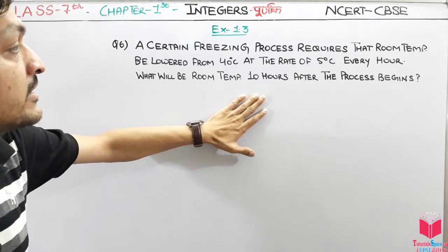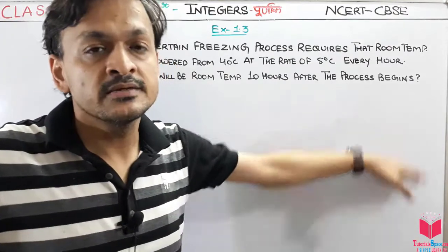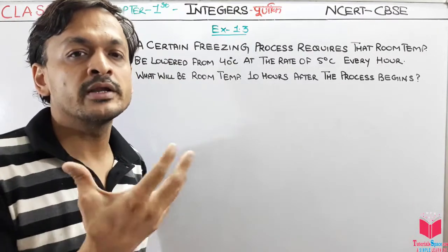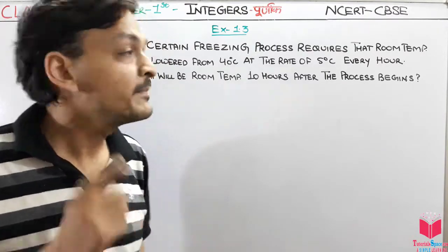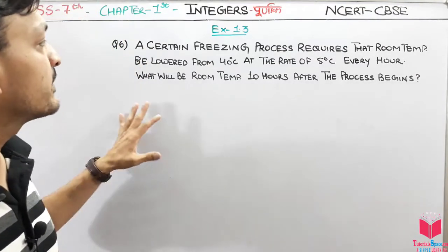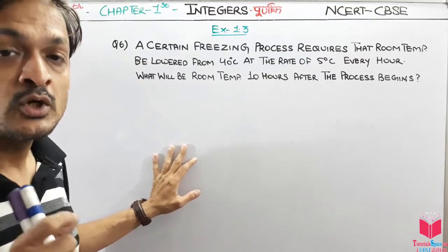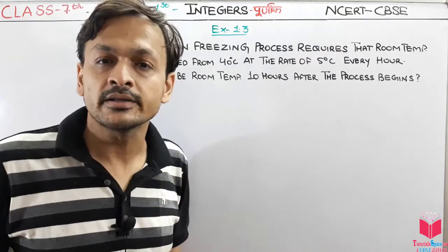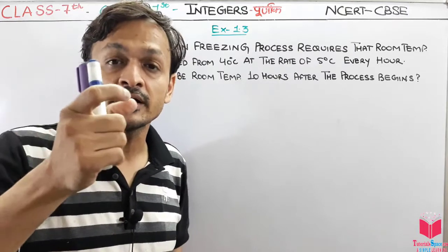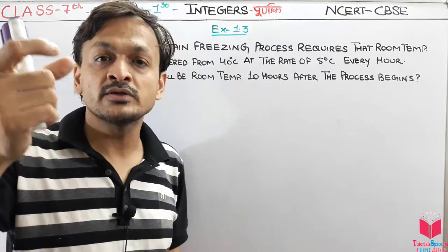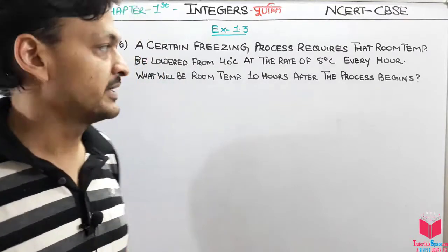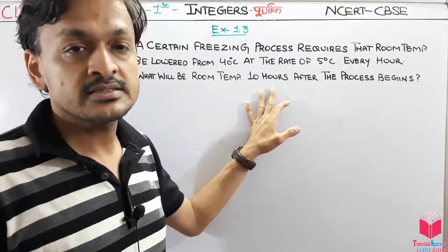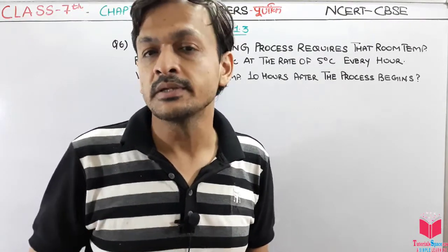10 hours after the process begins. This is a freezing process where the room temperature is 40 degree Celsius, which will lower by 5 degree Celsius every hour. Then what will be the room temperature after 10 hours?